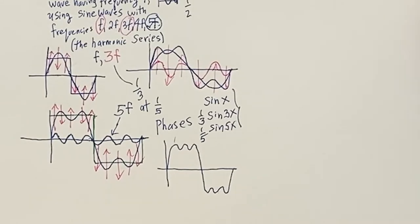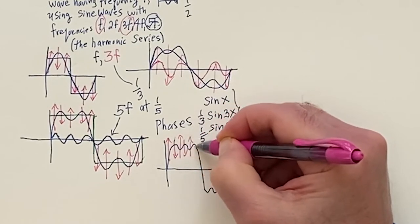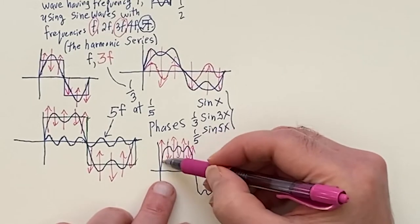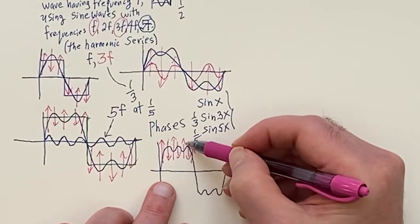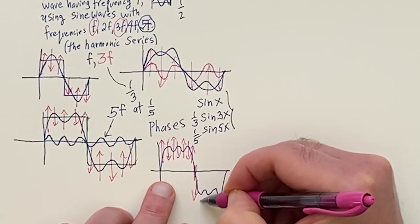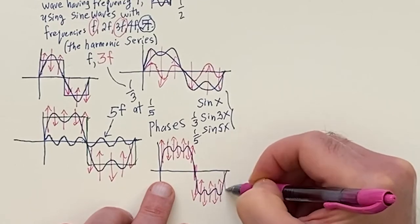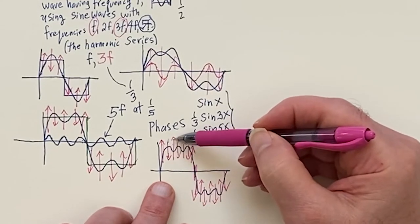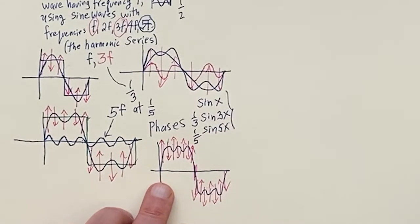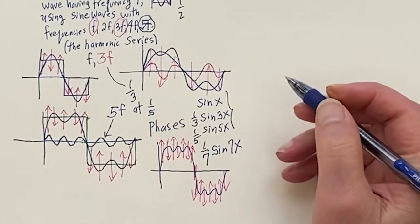The pattern continues: the next correction needs seven wiggles — counting the pairs: one, two, three, four, five, six, seven — the seventh harmonic at one-seventh amplitude. And then what'll happen when you do lots of them is you get something that has more and more corrections with amplitudes 1/7, working through the odd harmonics.